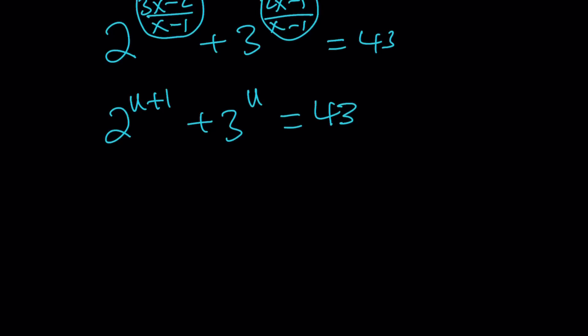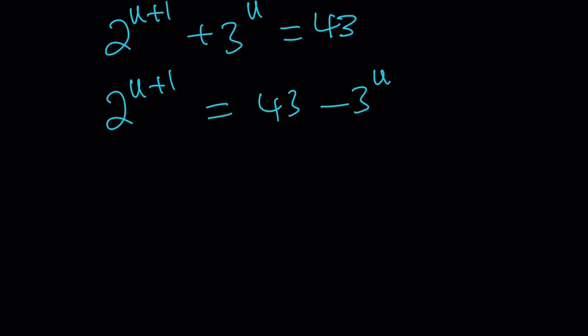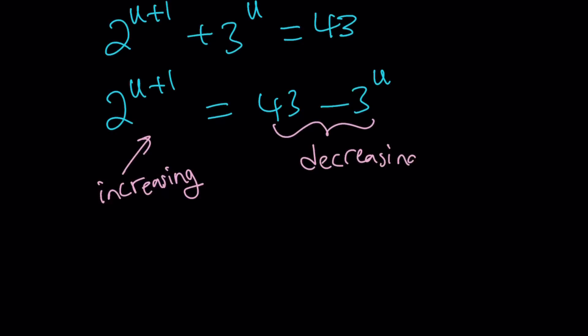There are a couple of different ways to look at it. I'm going to isolate 2 to the power of (u plus 1) and write it as 43 minus 3 to the power of u. Now, 2 to the power of (u plus 1) is an increasing function because it's exponential with a base greater than 1. And 3 to the power of u is also increasing, but when you negate it and subtract it from a constant, this becomes a decreasing function. So we have an increasing function equal to a decreasing function, which means they intersect — but they can only intersect at a single point.